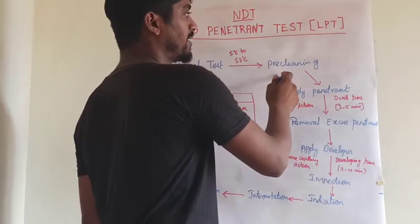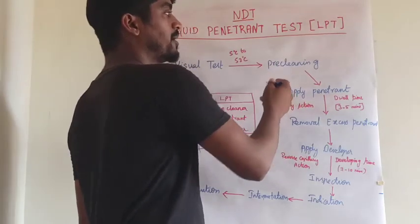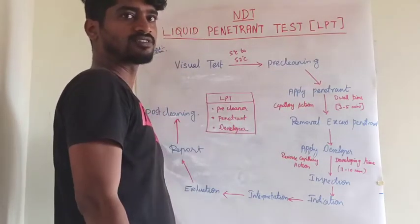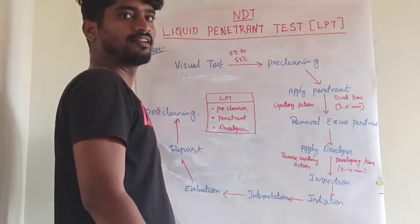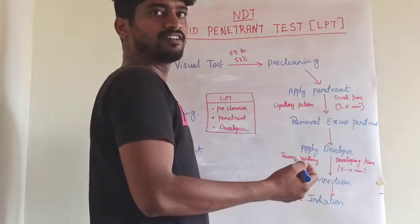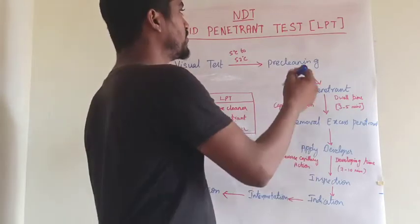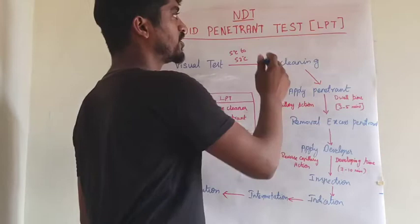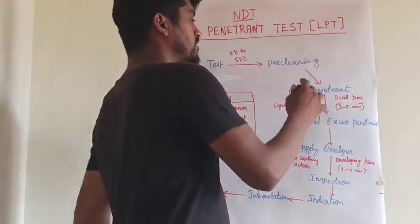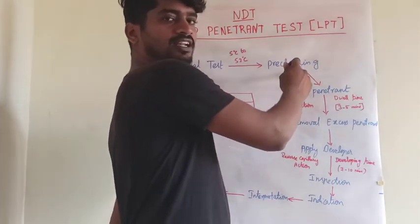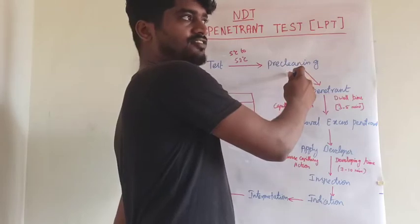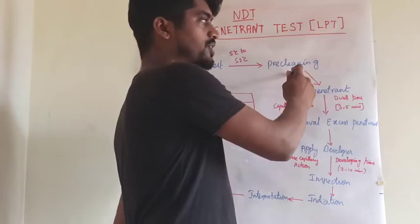The next process is pre-cleaning. Pre-cleaning is the major process to prepare the surface of the metal before carrying out the liquid penetrant test. Only with proper pre-cleaning can we find the defects accurately.